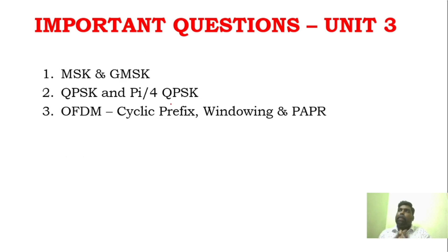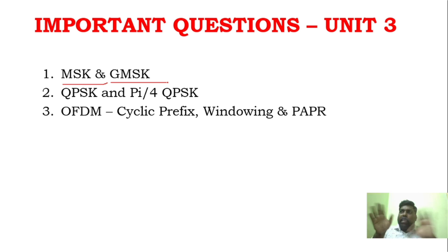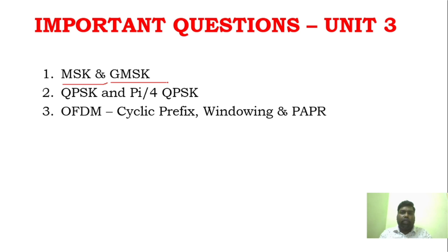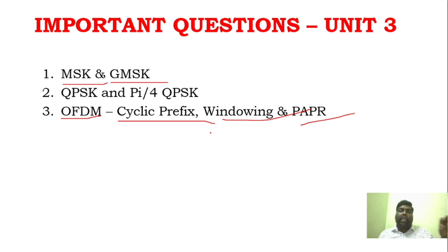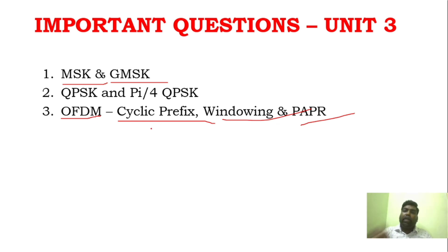Unit 3 is very very simple. If you study 3 questions, that is more than enough. If you compare MSK or GMSK, the variations are similar. QPSK and OQPSK are also similar variations, easy to compare. For OFDM, you definitely have to go through cyclic prefix, windowing, and PAPR — you can also get 8 marks on OFDM. Unit 3 is a trump card unit — just ask 3 questions and that is more than enough.